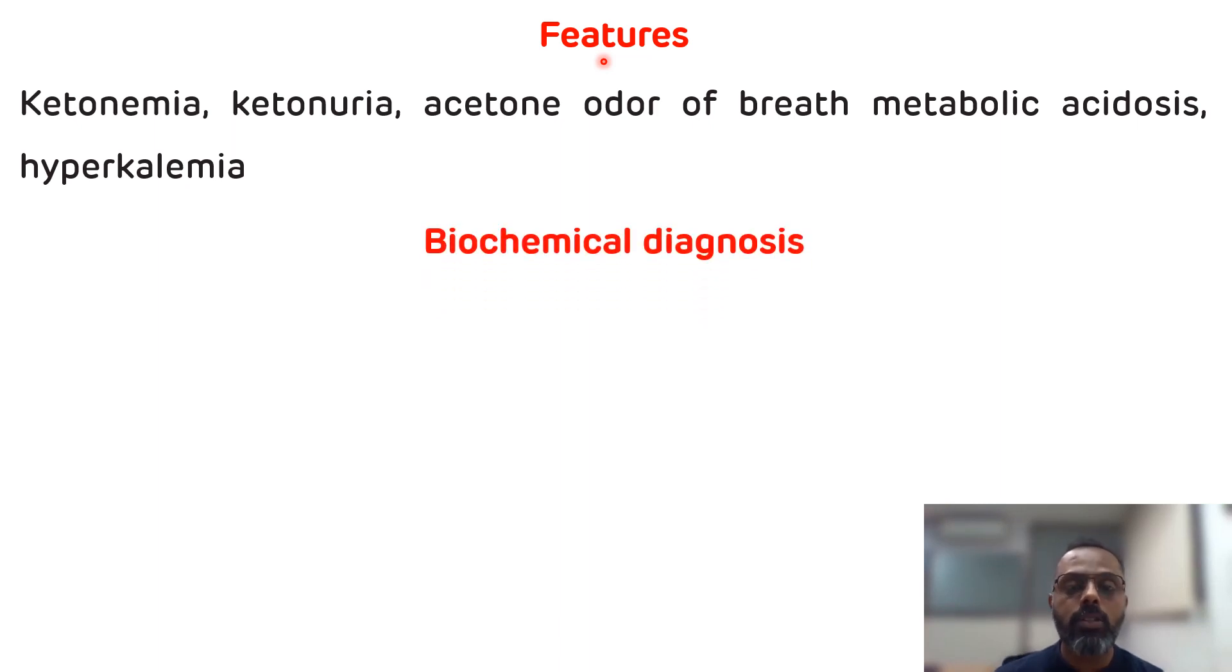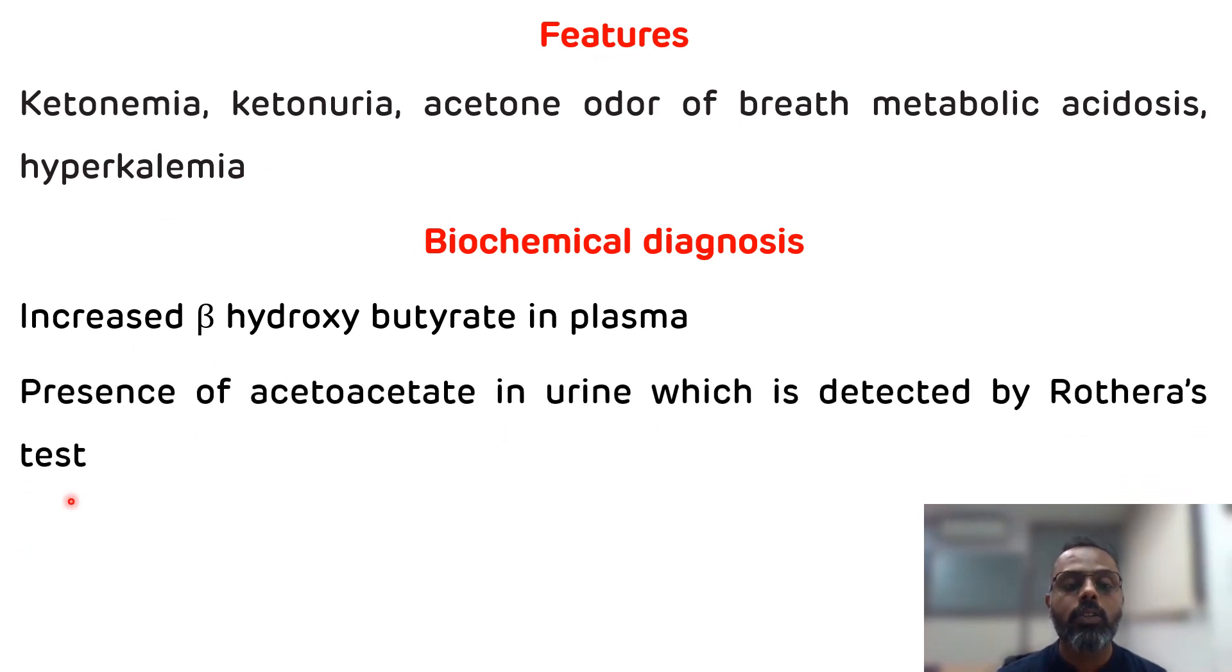Now, how to diagnose ketosis? Ketosis can be diagnosed by detecting ketone bodies in the blood as well as in the urine. In the blood, there will be increased level of beta-hydroxybutyrate. In the urine, there is presence of acetoacetate which can be detected by Rothera's test.